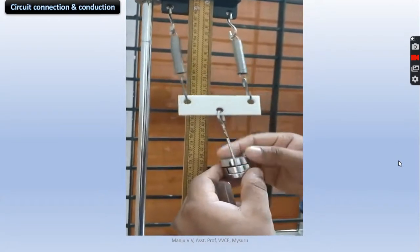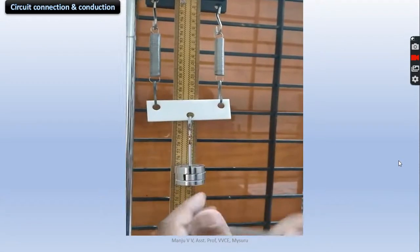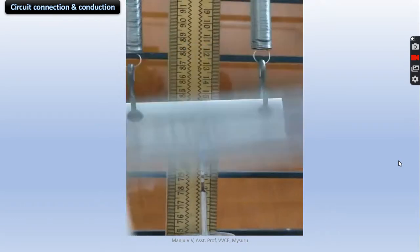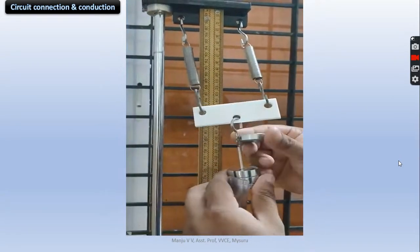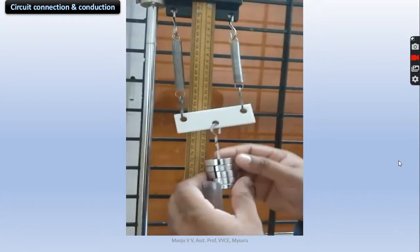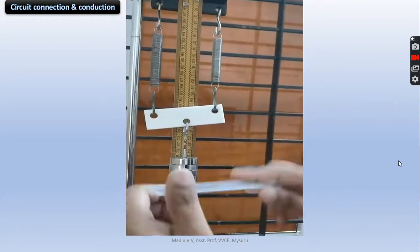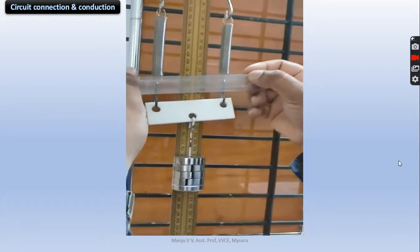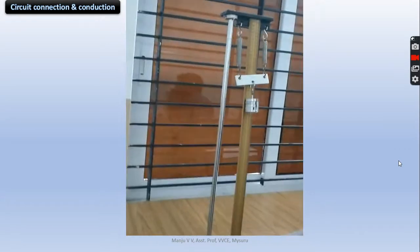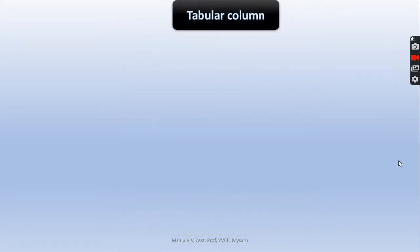Now add 100 grams of weight, 50 plus 50. Now keep the reference point and measure. It is 12.1 cm. Add 100 more. Now it is total 200 grams of weight. And measure - it is 13.2 cm in this case. Now we can go for the calculation.